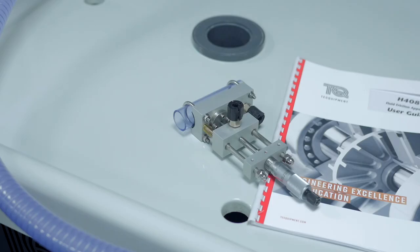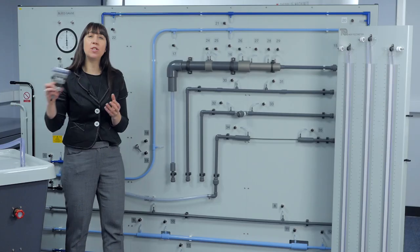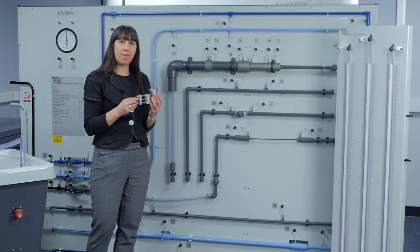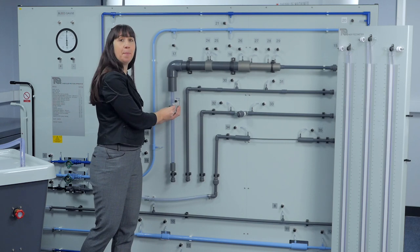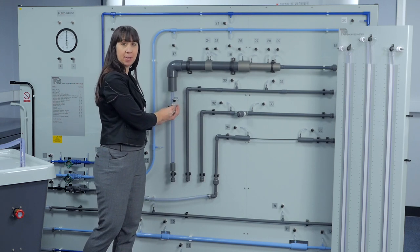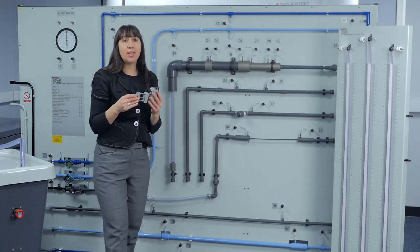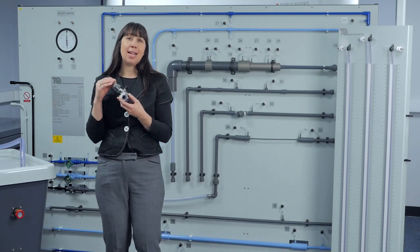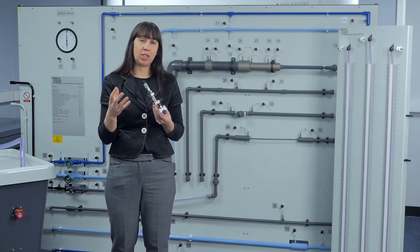A pitostatic tube is included for finding velocity profiles and flow coefficients by traversing the pitot across the pipe diameter. Using this device, you can also find the relationship between the flow rate and the pressure differential.